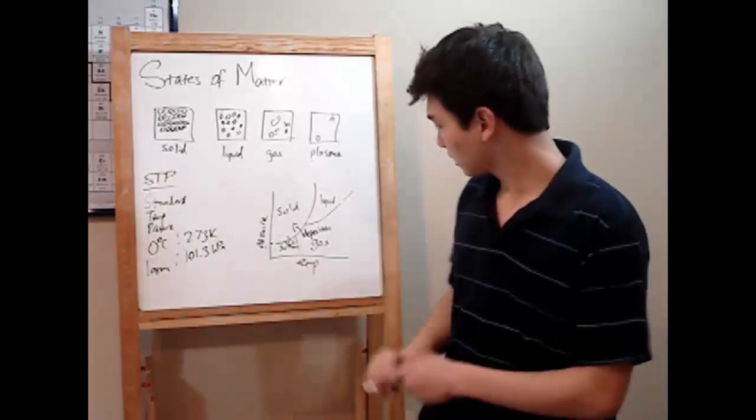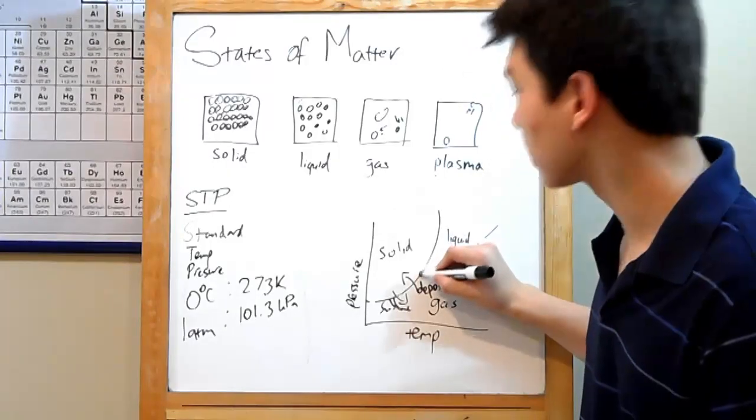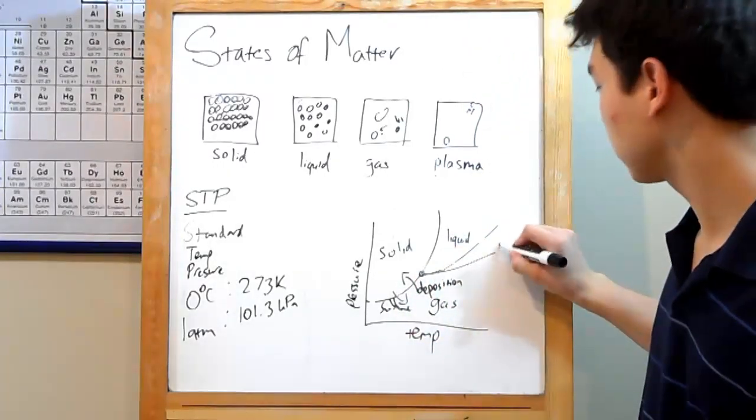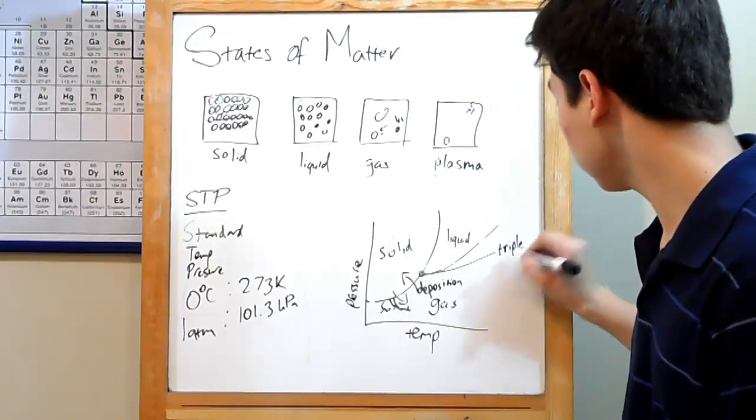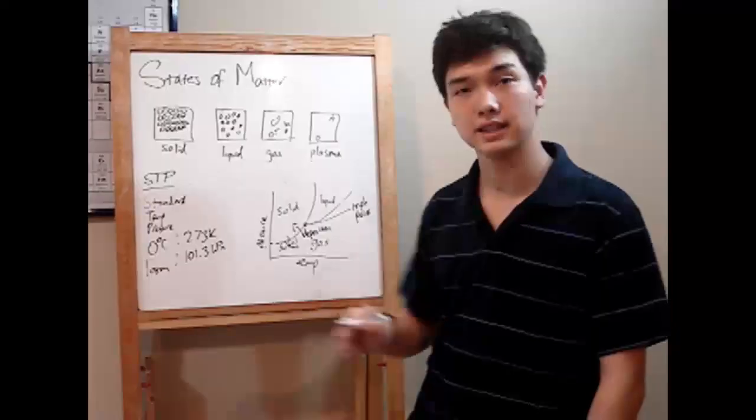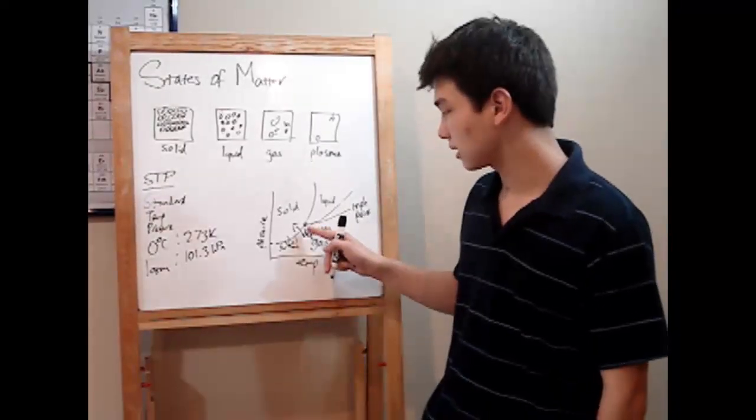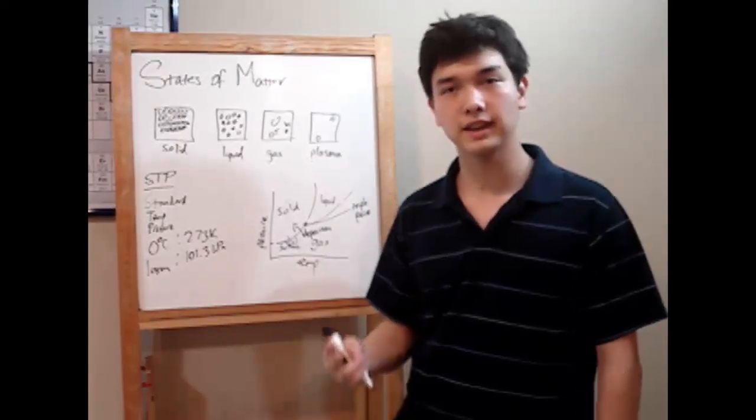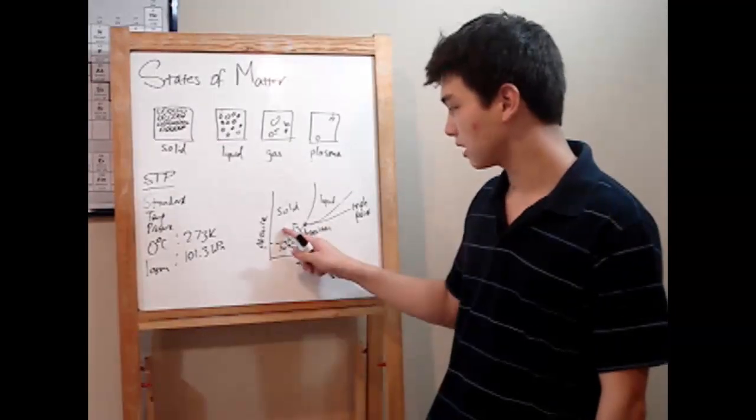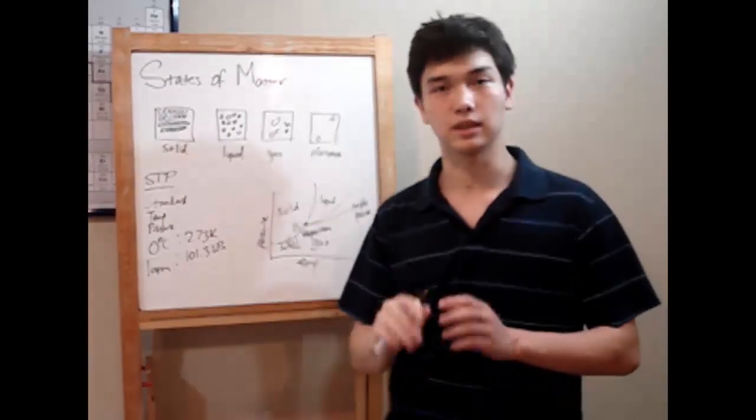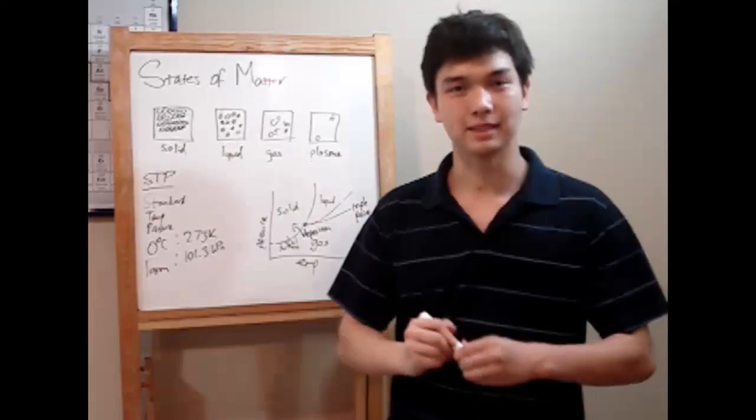Now, the last thing I want to point out is this one part here, where all your lines intersect. That's called the triple point, and if you can get your teacher to show this to you, do it. It's really cool. Right here, your substance will be in all three phases at once, at once a solid, liquid, and a gas. It looks really cool. I've seen it. Try to get somebody to do that for you.